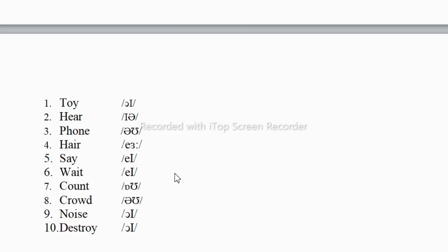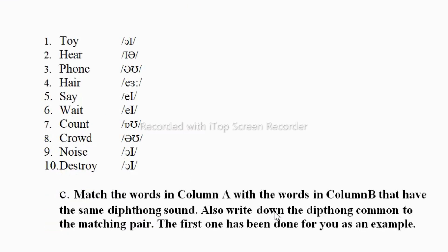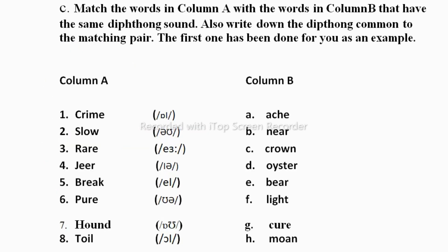Now let's see exercise C: match the words in column A with the words in column B that have the same diphthong sound, and also write down the diphthong common to the matching pair. The first one has been done for you as an example. You have to read the word in column A and then match it with column B.